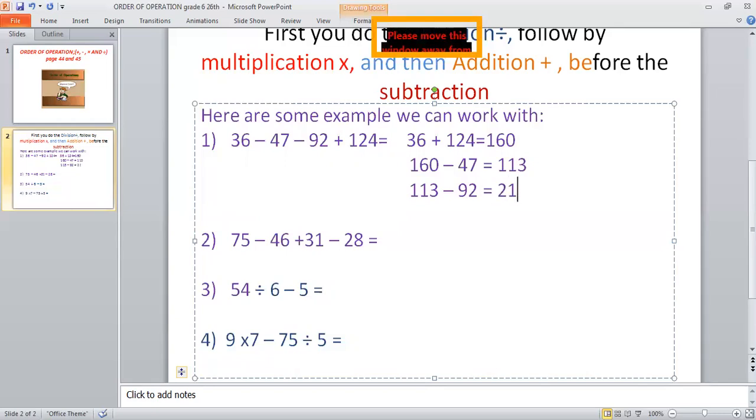What did I do first? I take the first number and I add it to the one that has addition. 36 plus 124. We're going to take the next example.